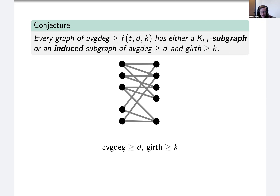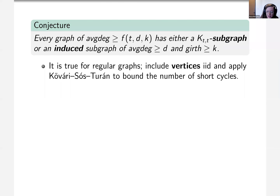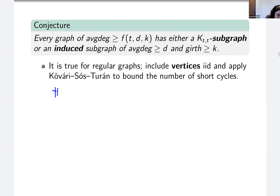This conjecture would imply Thomassen's conjecture because K_{t,t} is dense and regular and we know how to find subgraphs of large average degree and large girth within those. So this is strictly stronger than Thomassen's conjecture. You can also prove this conjecture for regular graphs, but it's a bit more involved — you're going to apply the Kővári–Sós–Turán theorem. Whereas before you included edges independently at random with some probability, now we include vertices independently at random with some probability. The key point is that you use the Kővári–Sós–Turán theorem to bound the number of short cycles — let's do that by counting the number of four-cycles.